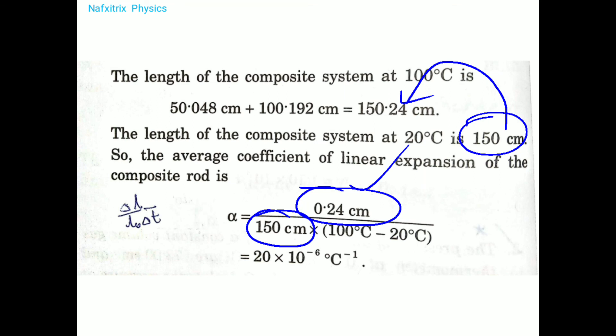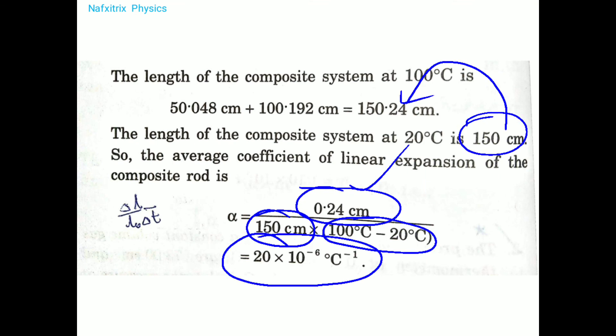Applying the formula: average alpha = (L - L₀) / (L₀ × ΔT) = 0.24 / (150 × 80). This gives the average coefficient of linear expansion for the composite rod — meaning both rods combined, how much fractional change in overall length occurs per unit rise in temperature. That is the final answer to this problem.